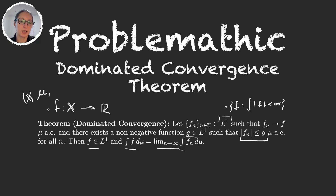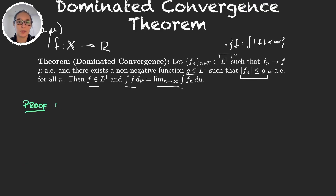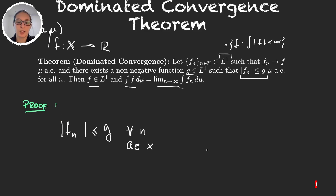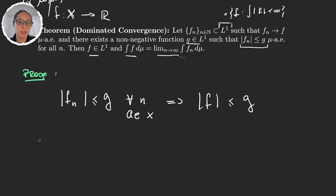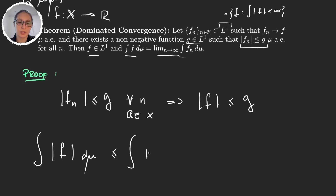Let's look at the proof. The first thing we have to prove is that f is in L1. The hypothesis that our sequence is dominated by a function in L1 is going to be useful here — |fn| ≤ g for every n almost everywhere. Because this happens for every n, it will happen for the supremum, and then f is also dominated by g. To prove f is in L1, we calculate the integral of |f|, and since f is dominated by g, this integral is less than or equal to the integral of g. Since g is in L1, this is finite. So f is in L1.